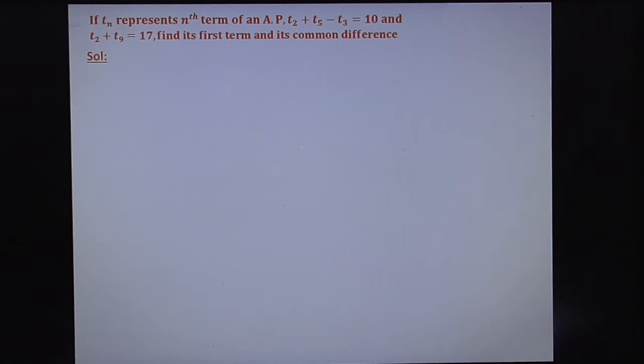If TN represents nth term of an AP, T2 plus T5 minus T3 equals 10 and T2 plus T9 equals 17. So two conditions, two equations given. By using these two equations, you have to find the first term and common difference.